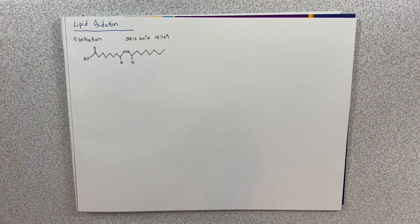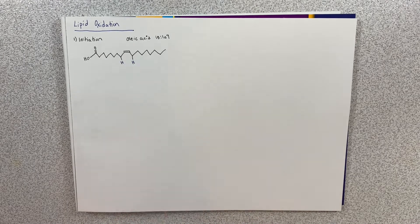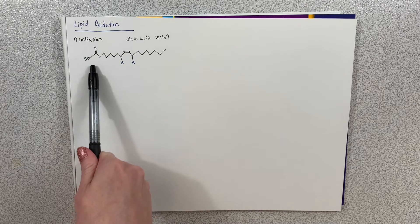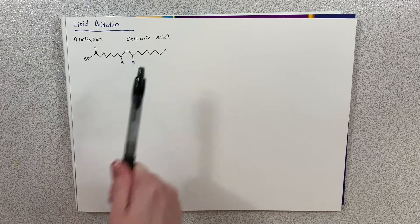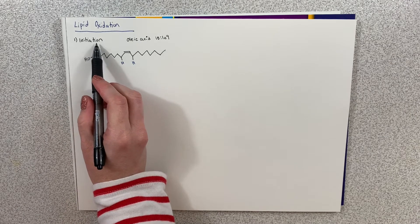Hey everyone! Today we're going over lipid oxidation, which is a huge set of reactions that start when unsaturated fatty acids are being broken down. But we're going to go through it step by step so you have no worries. We are going to use oleic acid in our example of lipid oxidation, and I already have it drawn here. We'll start at the first step in lipid oxidation, which is called initiation.